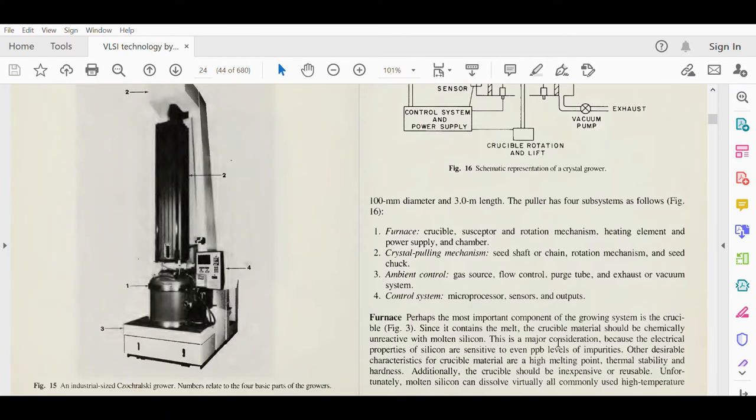The first subsystem is the furnace. Perhaps the most important component of the growing system is the crucible, where the melt is held. Since it contains the melt, the crucible material should be chemically unreactive with molten silicon. Whatever pot you are using to hold that melt has to be non-reactive. If it reacts with molten silicon, some other kind of reaction can be generated. Designing the crucible and selecting the material is very important for crystal growth of silicon.